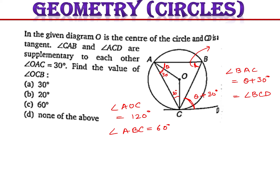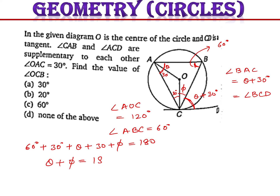Let's say angle ABС's remaining angle is δ. Applying the angle sum property in triangle ABC: 60 plus 30 plus (theta plus 30) plus δ equals 180 degrees. From here I get the first equation: theta plus δ equals 60 degrees.